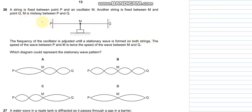Question number 26 says that a string is fixed between P and an oscillator M and between M and Q. The frequency of the oscillator is adjusted until the stationary waves form. The speed of the wave between P and M is twice the speed as between M and Q. So if the velocity is 2 here, the velocity is 1 here.